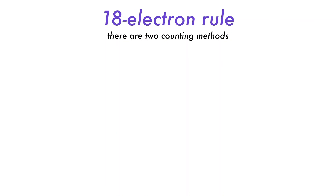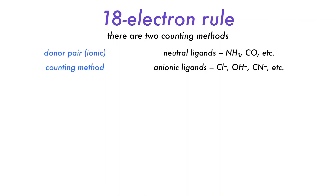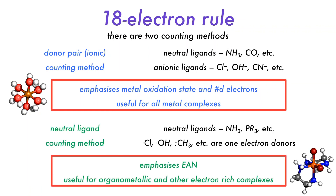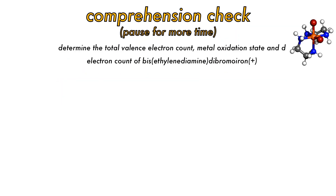Summarizing the two methods: the donor pair method counts every ligand as a Lewis base and emphasizes the metal oxidation state and d electron count, which are important because they often control the reactivity of the complex. The neutral ligand counting method emphasizes the effective atomic number rule, which is most useful for organometallic complexes, especially those of very electron-rich metals on the right-hand side of the transition metal series.